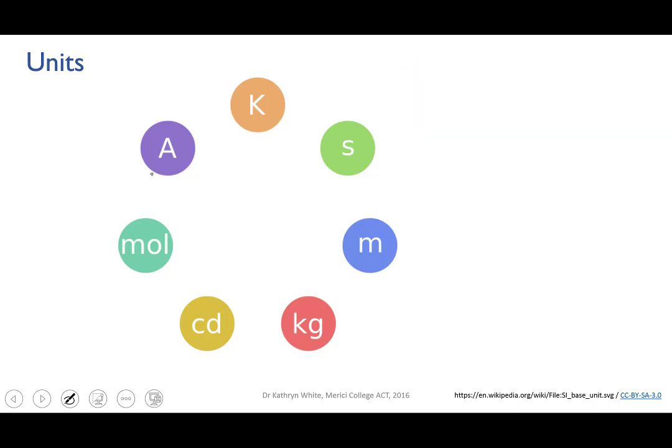Two of these units are not so common in chemistry. There's amperes, the unit of electrical current, although you may encounter this in electrochemistry, and candelas, the measurement of the intensity of light. The other five, though, will turn up frequently.